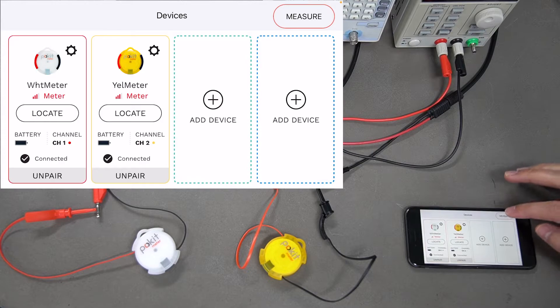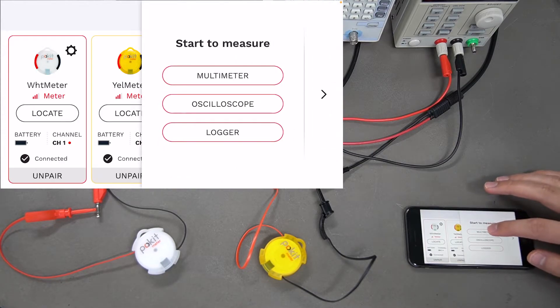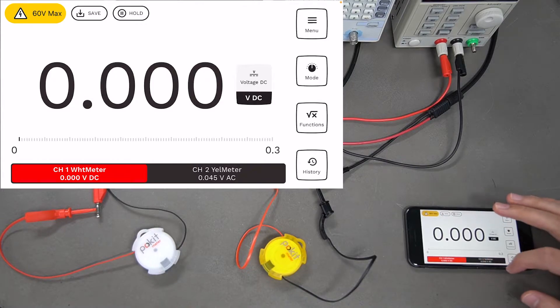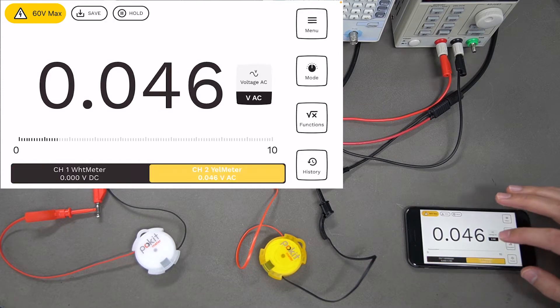We'll press measure at the top and go into the multimeter function. You can see we've got two channels for the two pocket meters that we have: the white one in channel one and the yellow in channel two.